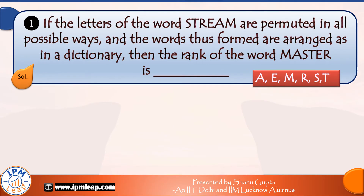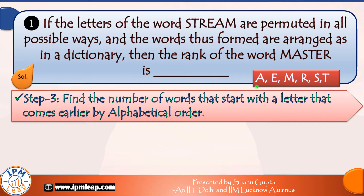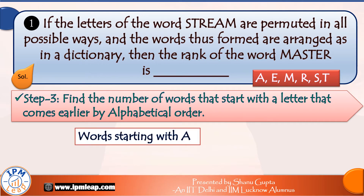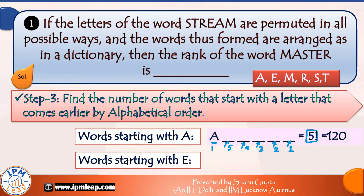Recall how you look up words in a dictionary — you go by the first letter. Before the word master, there will be all words that start with a letter superior in alphabetical order. All words starting with A and all words starting with E will be ranked earlier. Words starting with A: we fix A in the first place, and the remaining five places can be filled with the remaining five letters in 5! = 120 ways. Similarly, there will be 120 words that start with E.